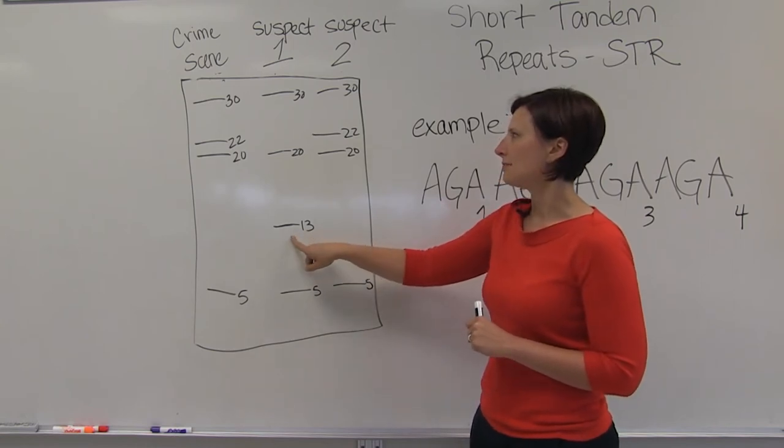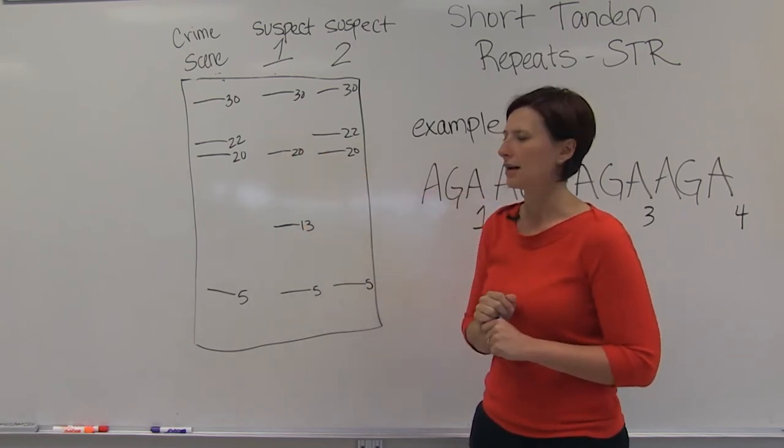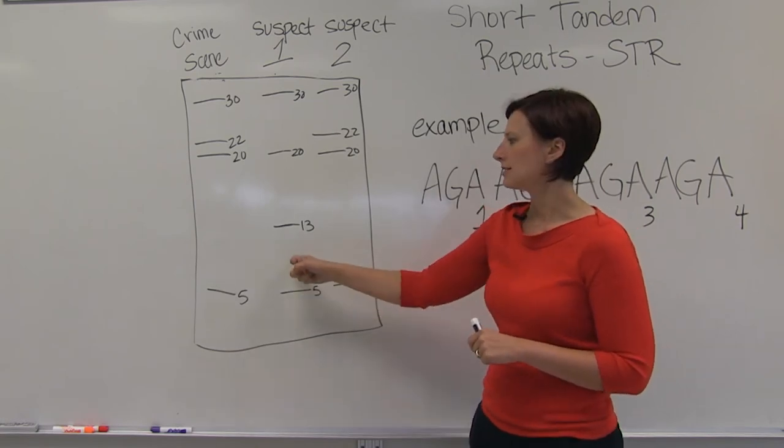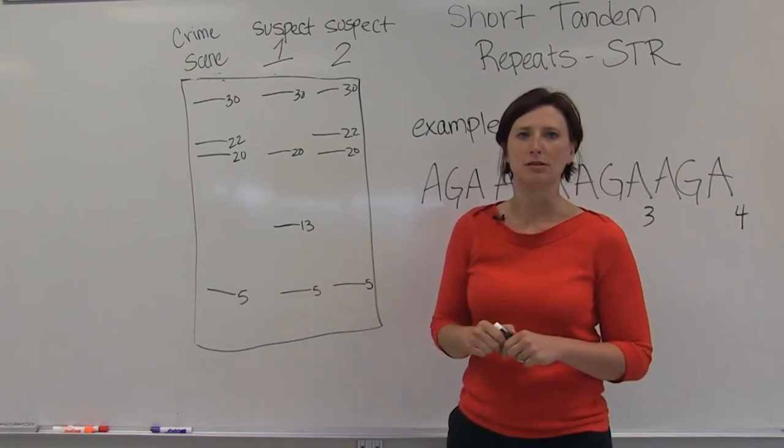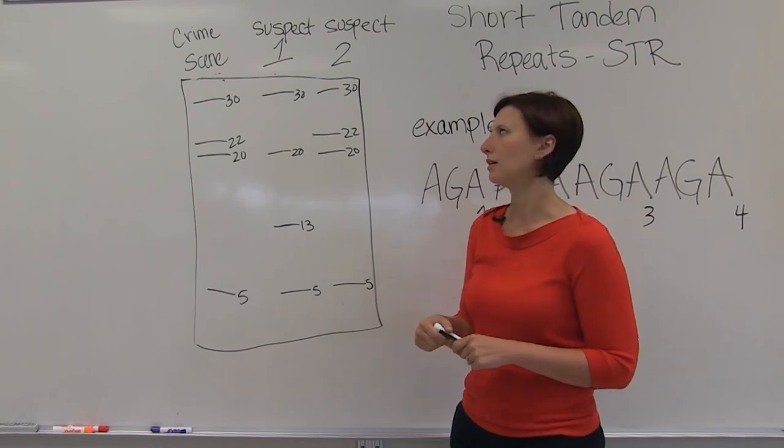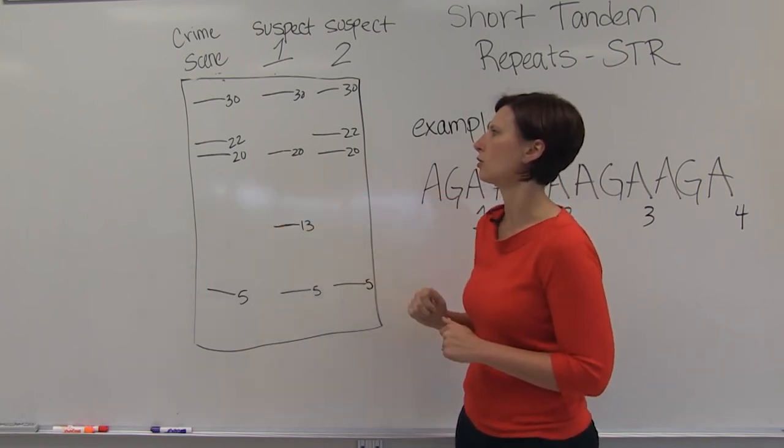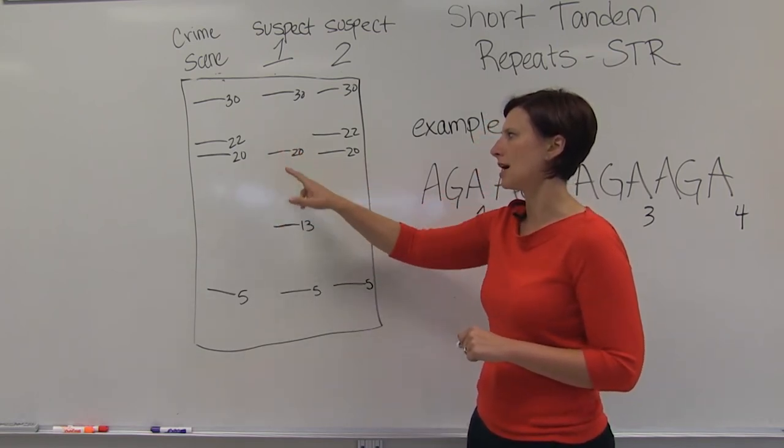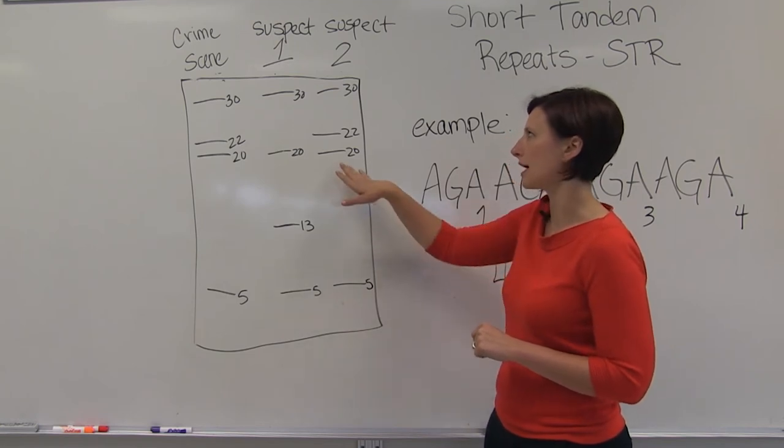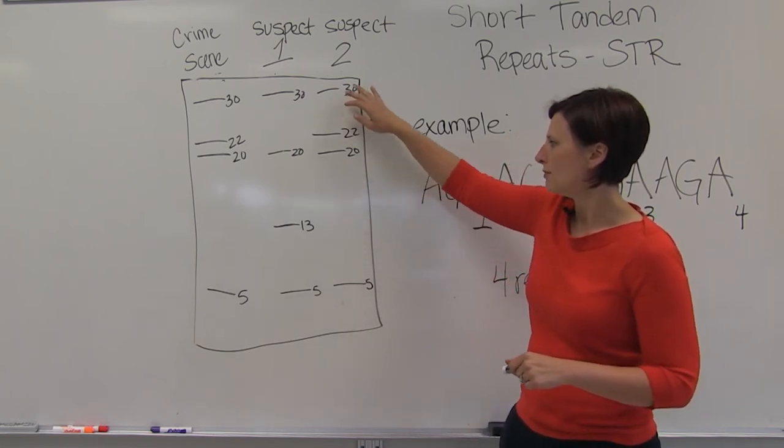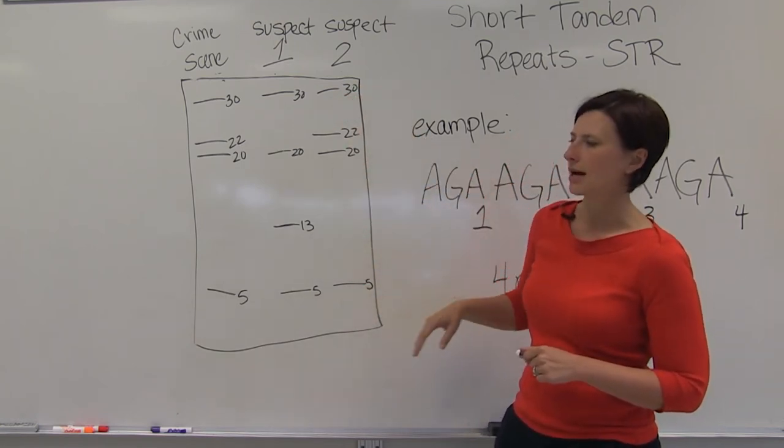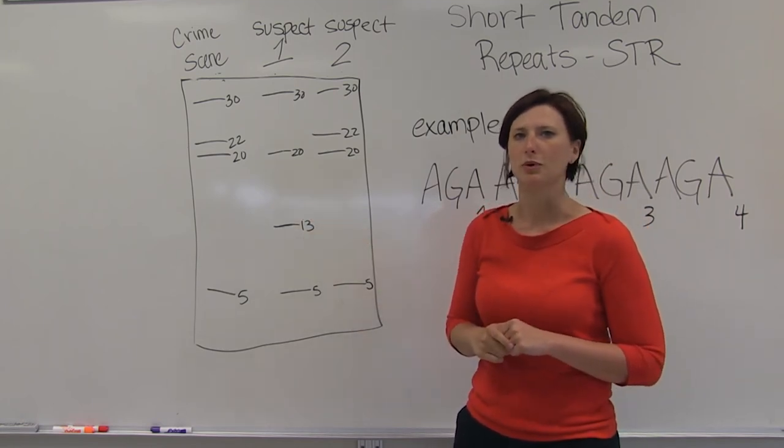but doesn't match at another loci. This suspect's DNA could be excluded from being responsible for crime scene DNA because it's not a match at all the loci, whereas suspect two matches at all four loci that we're looking at in this individual example.